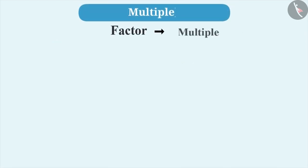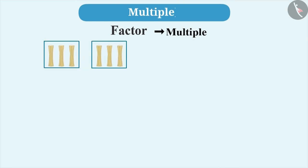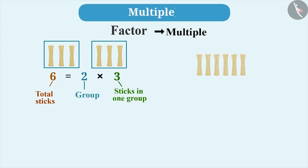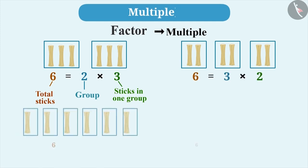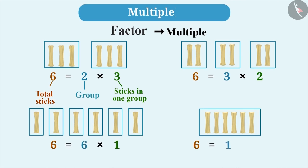We express factors as multiples. Suppose 6 sticks are divided into 2 groups with 3 sticks in each group, then we express it as 6 equals 2 multiplied by 3. Similarly, if 6 sticks are divided into 3 groups with 2 sticks in each group, then it is expressed as 6 equals 3 multiplied by 2. Similarly, we express 6 as 6 multiplied by 1 and 1 multiplied by 6.